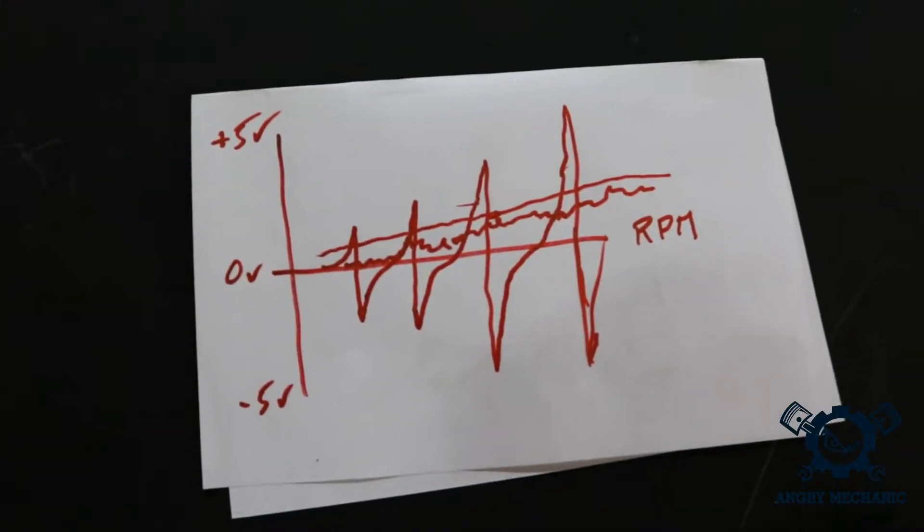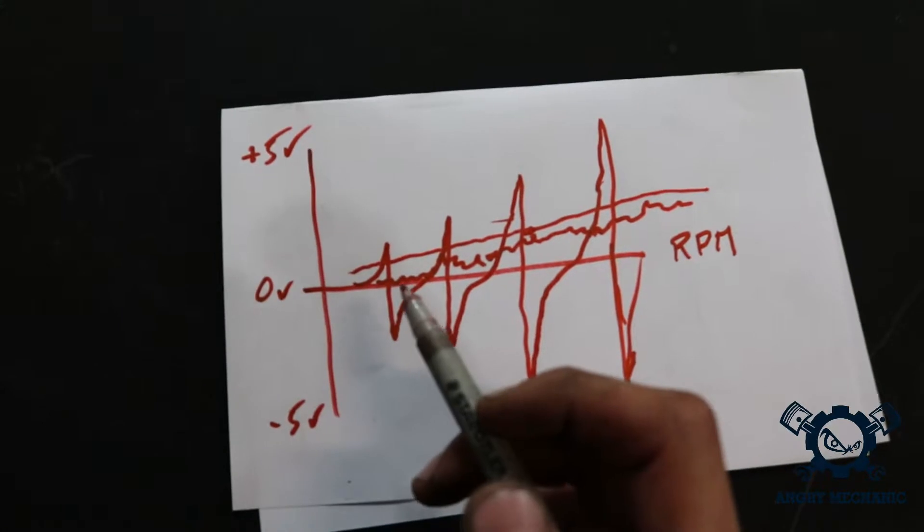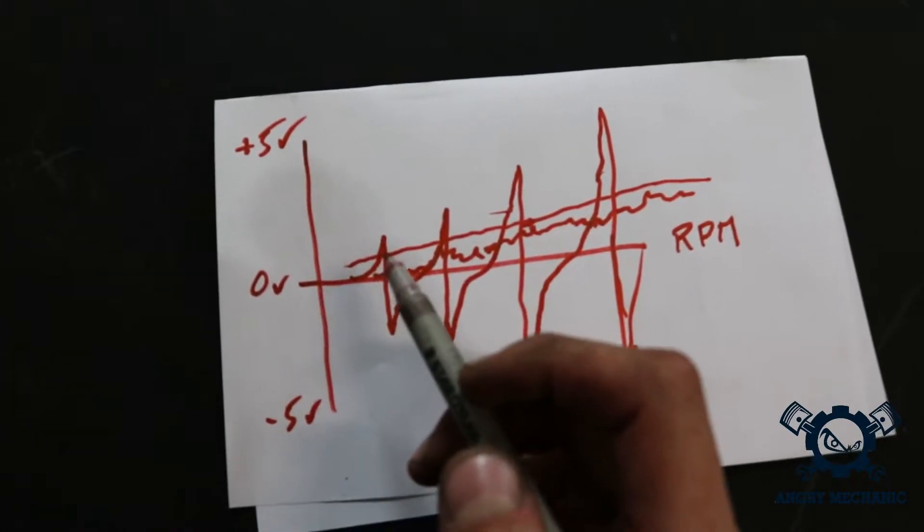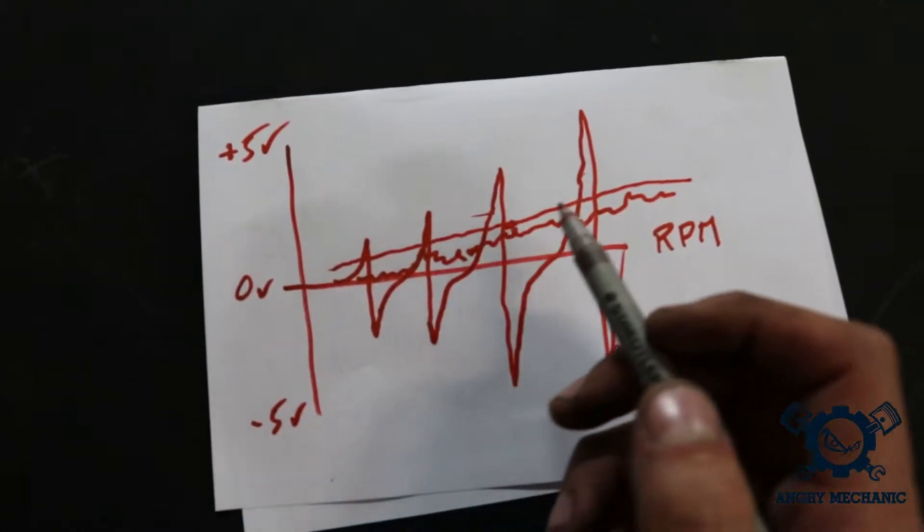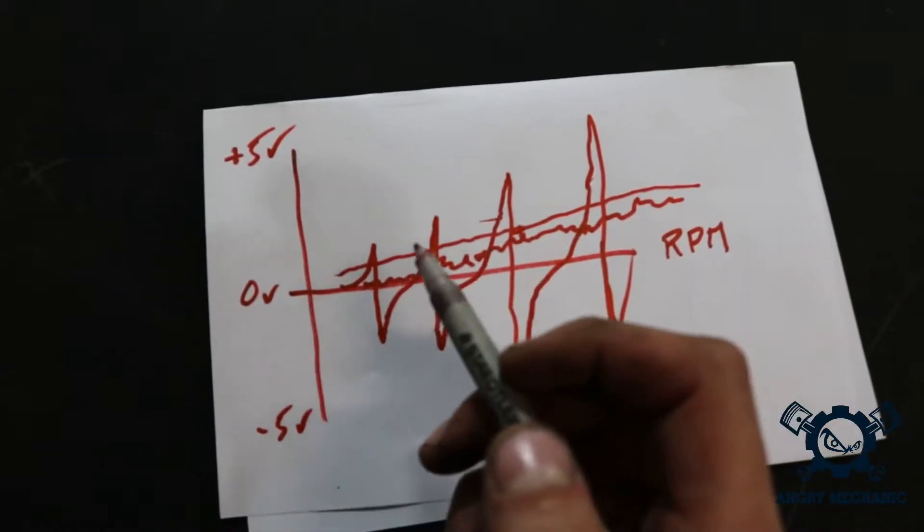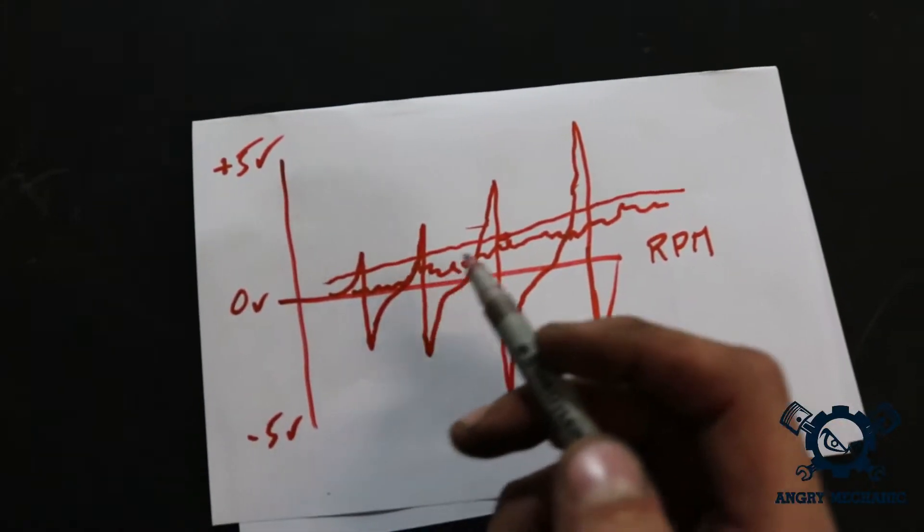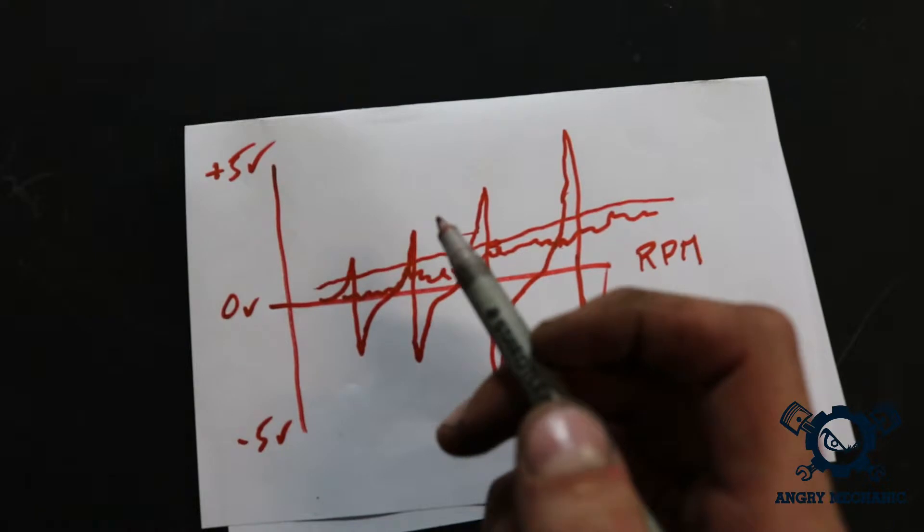And this is something you would program in to like this line here. Let's say this line here is our arming threshold. The ECU would pretty much ignore everything under here, and it will take this data in.